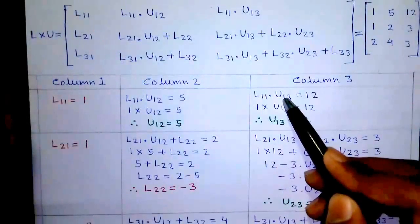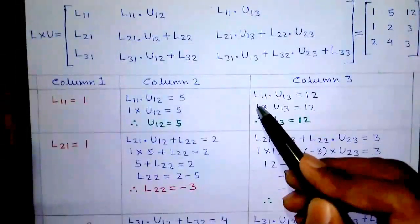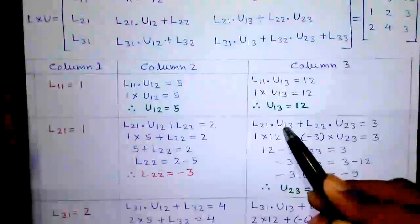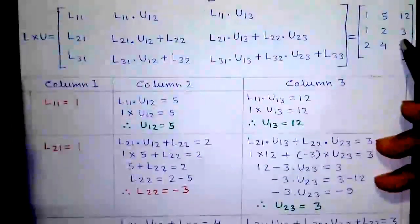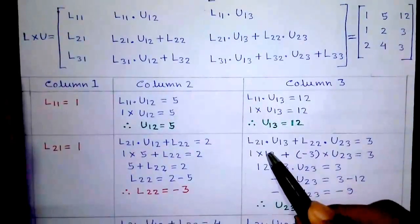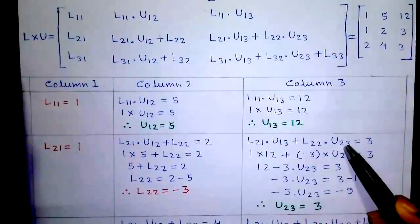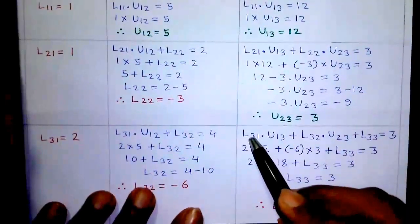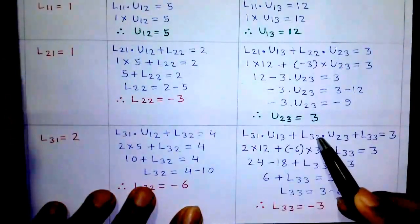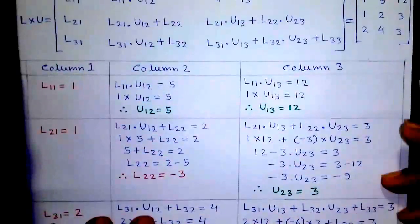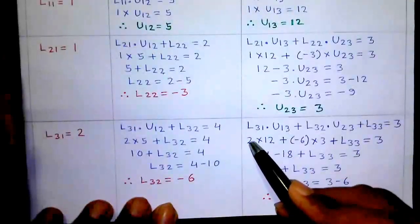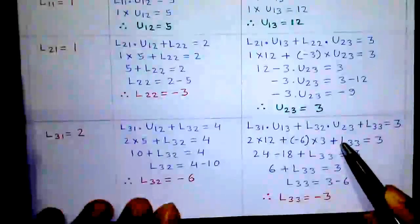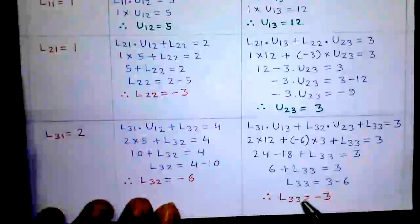Next, column 3. First element: L11 into U13 equals 12. L11 is 1 into U13 equals 12, so U13 equals 12. Next element: L21 into U13 plus L22 into U23 equals 3. 1 into 12 plus minus 3 into U23 equals 3, so U23 equals 3. Last element: L31 into U13 plus L32 into U23 plus L33 equals 3. 2 into 12 plus minus 6 into 3 plus L33 equals 3, so L33 equals minus 3.